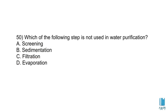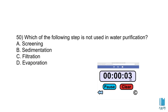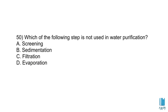Which one of the following steps is not used in water purification? The options include screening, sedimentation, filtration, and evaporation. As you can see: screening removes large particles, sedimentation, filtration, and evaporation are all steps, but one is not used in water purification.